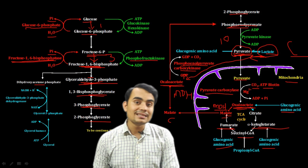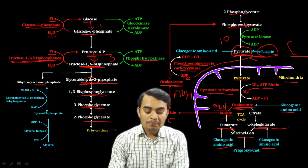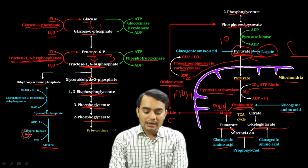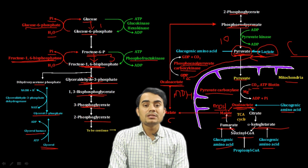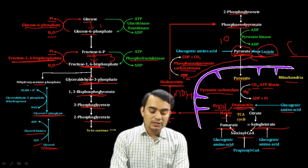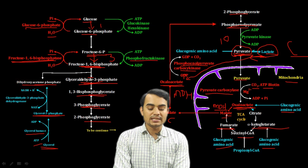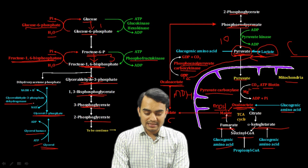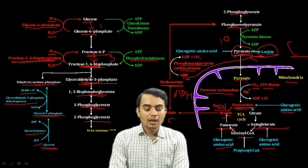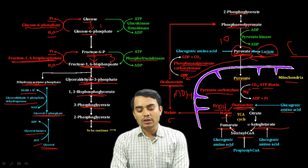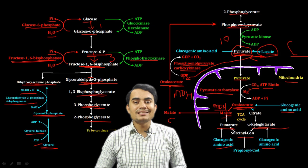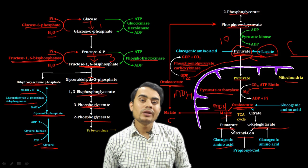If glycerol is the substrate, glycerol is first converted to glycerol-3-phosphate by the enzyme glycerol kinase, utilizing an ATP molecule. Then glycerol-3-phosphate is converted to DHAP (dihydroxyacetone phosphate) by glycerol-3-phosphate dehydrogenase, with formation of NADH. DHAP then enters the pathway at fructose-1,6-bisphosphate, and the same reversible process continues to form glucose.